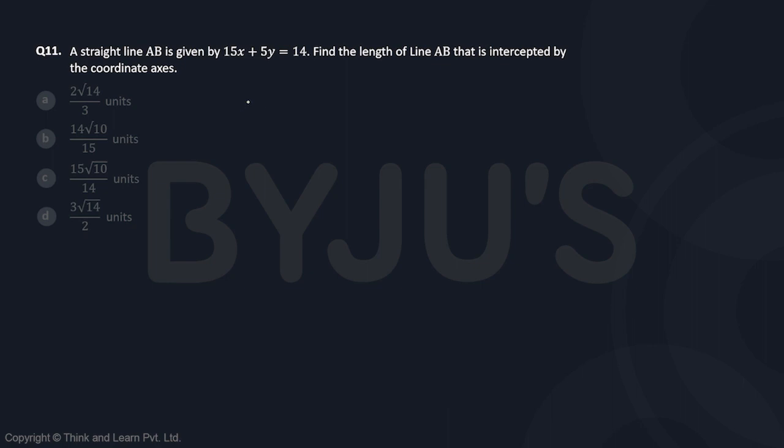First, find the intersection point at the x-axis by substituting y as 0. If I substitute y as 0, the value of x will be 14/15. Similarly, the intersection point at the y-axis: the value of y by putting x as 0 will be equal to 14/5.